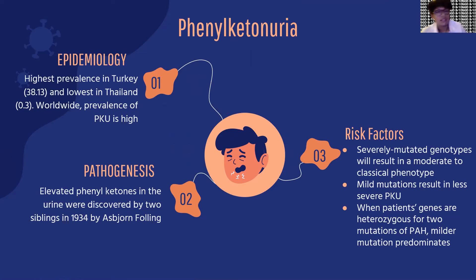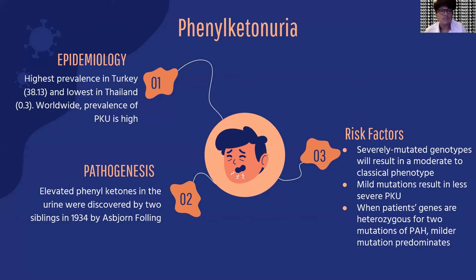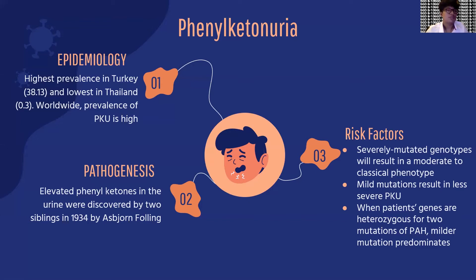PKU was identified through the finding of elevated phenylketones in the urine of two siblings in 1934 by Asbjørn Følling. The toxicity mechanism of phenylalanine is not completely understood. Treatment by a phenylalanine-restricted diet was first described by Horst Bickel in 1953, and early consistent treatment appears to prevent intellectual disability. The mutation in the gene coding the phenylalanine hydroxylase (PAH) enzyme causes PKU. This gene is located on the long arm of chromosome 12, specifically in the band region q22 to q24.1, and there are more than 800 mutations that may cause mutation in the PAH gene.